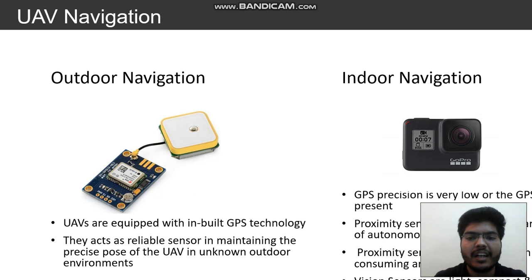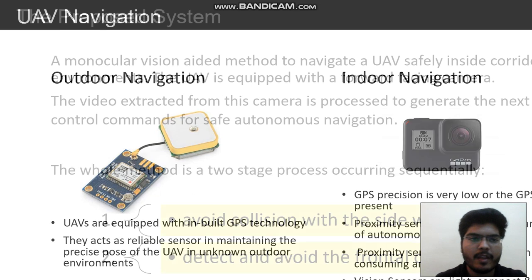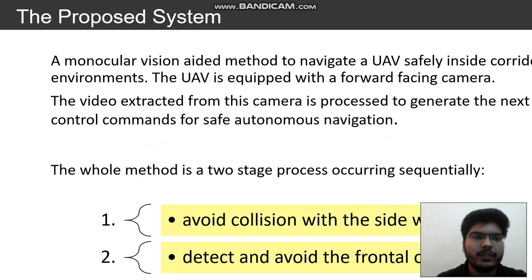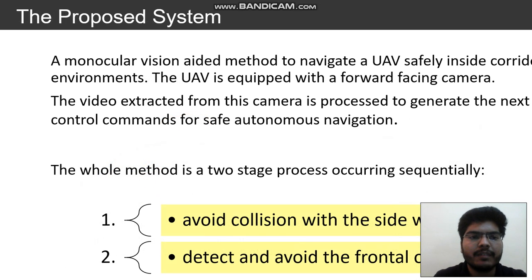Vision sensors are light, compact, and low power consuming devices. The proposed system in this paper proposes a monocular vision aided method to navigate a UAV safely inside corridor environments.